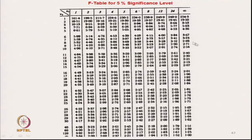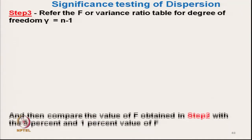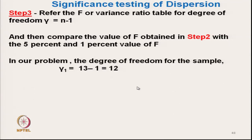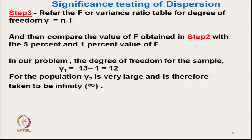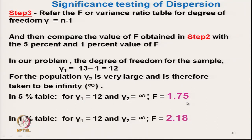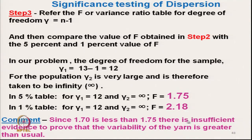For 5% significance level the table value is 1.75. The degree of freedom is n - 1 = 12 for the sample, and infinity for the population. Our calculated F value is 1.7, which is less than 1.75. Therefore there is insufficient evidence to conclude that the variability is greater than usual.